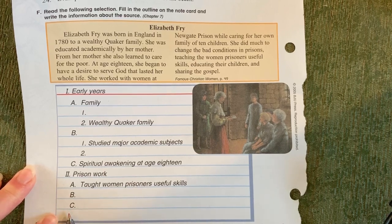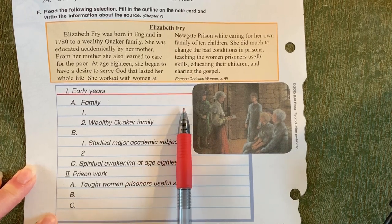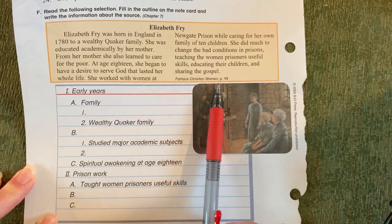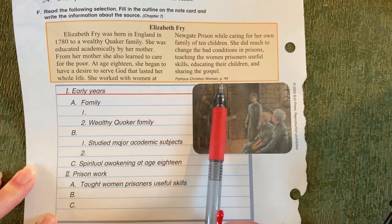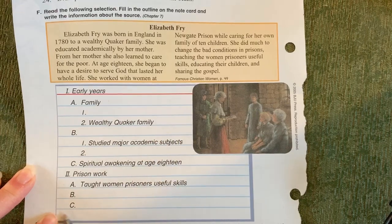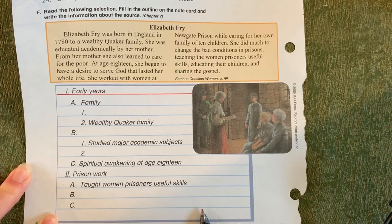The last thing you need to do is put the information about the source. If you look at the end of the selection, it tells you where this information came from — that's what you need to include on that last line. You can look in your book at pages 131 and 132 from chapter 7, where it talks about taking notes.